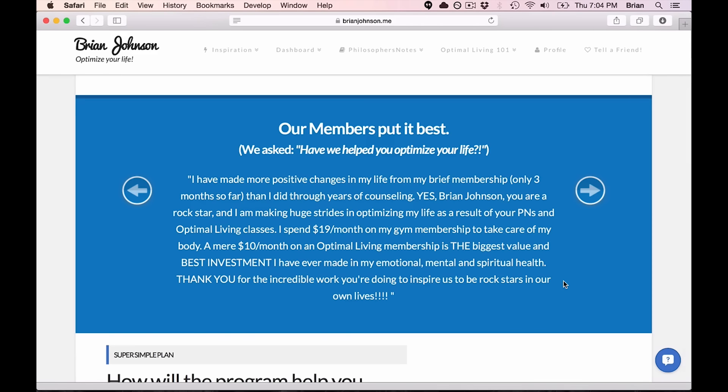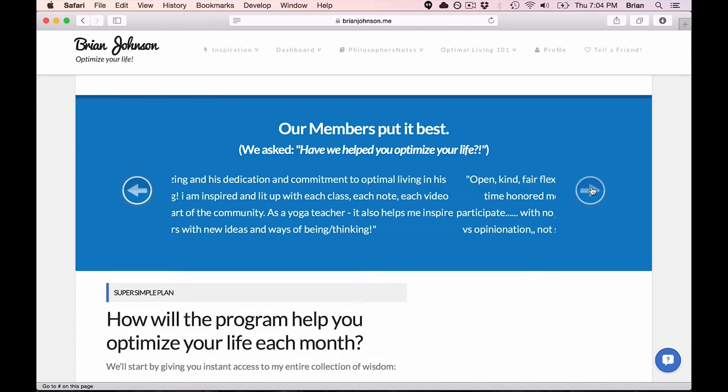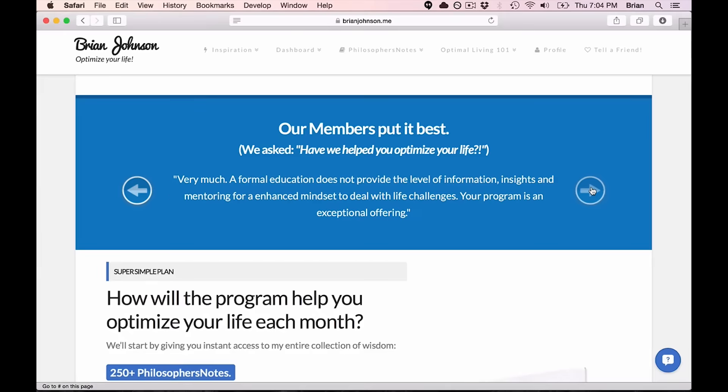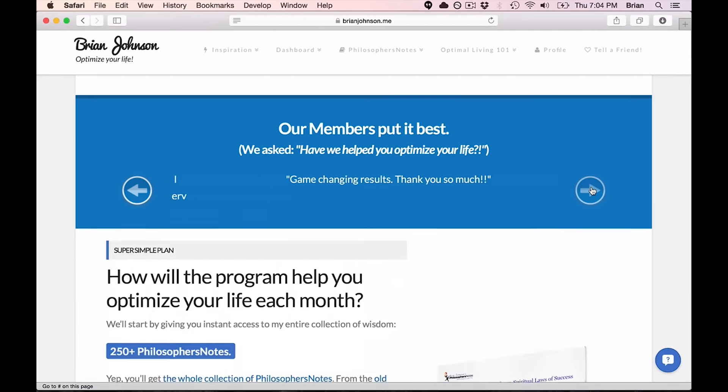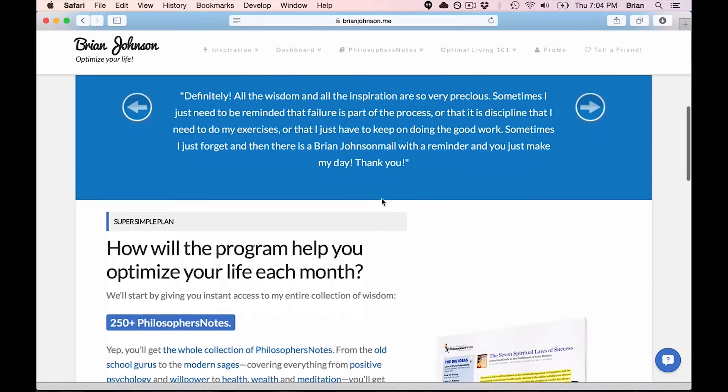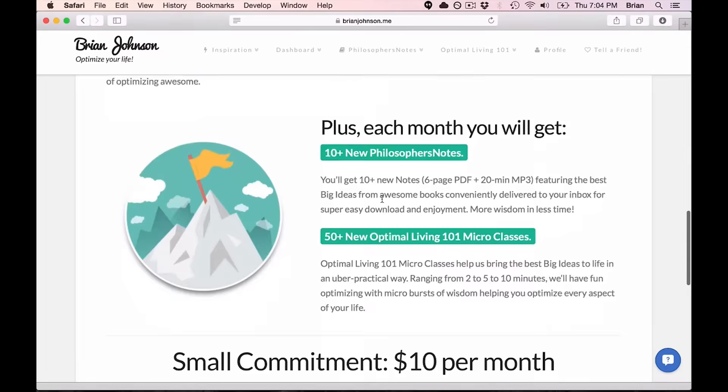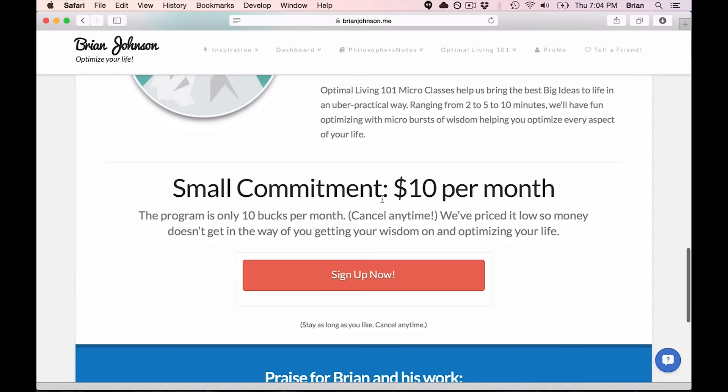And I'm making huge strides in optimizing my life as a result of your philosopher's notes and optimal living classes. I spend $19 a month on my gym membership to take care of my body. A mere $10 a month on an optimal living membership is the biggest value and best investment I've ever made in my emotional, mental, and spiritual health. Thank you for the incredible work you're doing to inspire us to be rock stars in our own lives. Unbelievably inspiring and humbling. In 24 hours, we received hundreds of extraordinary notes from members around the world. So there you go. That's a quick look at what we're up to. 10 bucks a month.